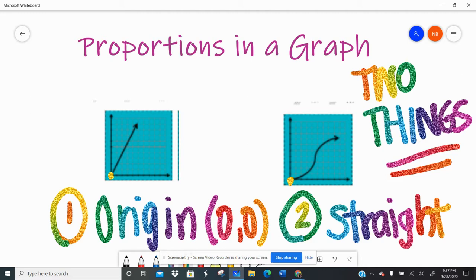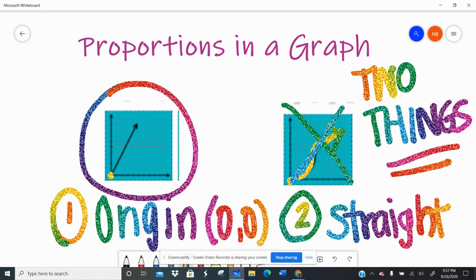So this little squiggly over here, nope, not proportional. It went through the origin, but it's not a straight line. The proportional one is this one over here. It went through the origin and is a straight line.